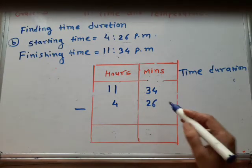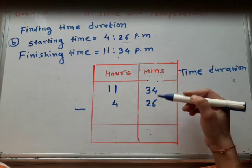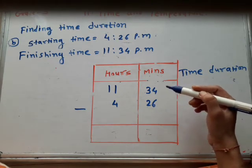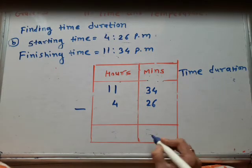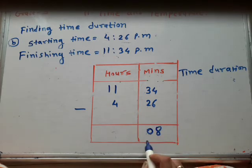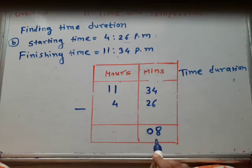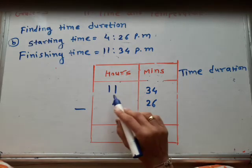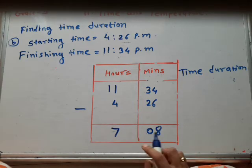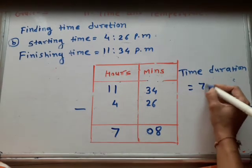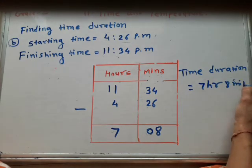Now we subtract. 34 minus 26 — we get 8 minutes. And 11 minus 4 — we get 7. Here there is no need to borrow. So we get the time duration: 7 hours 8 minutes. This is your time duration.